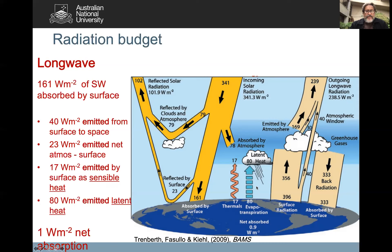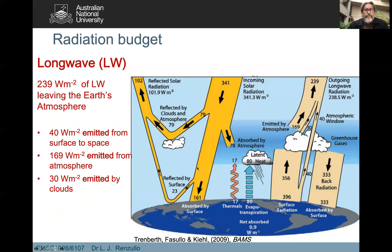80 percent is in the latent heating or evaporative component — evaporation from the land surface and transpiration from trees — leaving about 1 watt per square meter absorbed by the Earth. Of the 239 watts per square meter leaving the Earth-atmosphere system, 40 watts per square meter is emitted from the surface to space, 169 watts per square meter is emitted from the atmosphere, and 30 watts per square meter is emitted by clouds. This is all averaged in time and space.